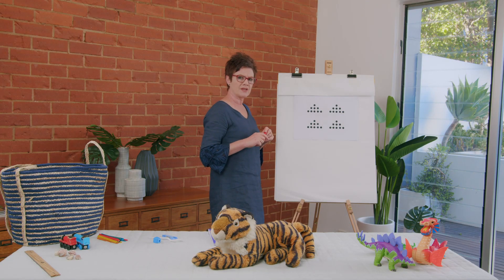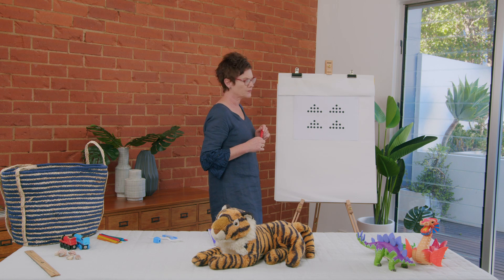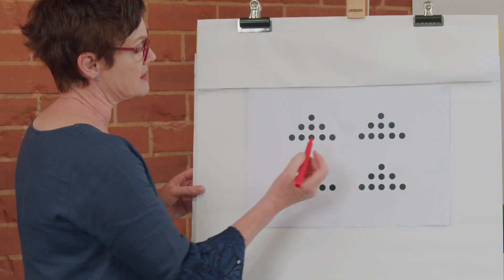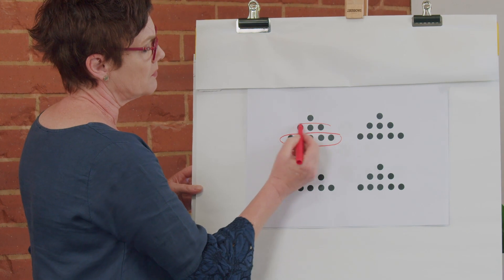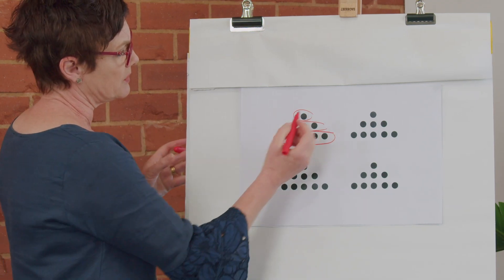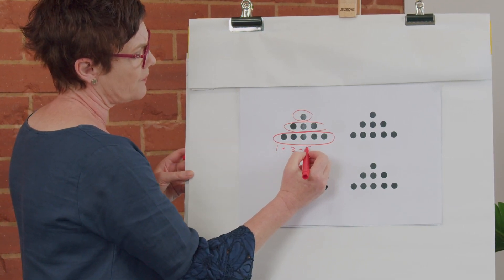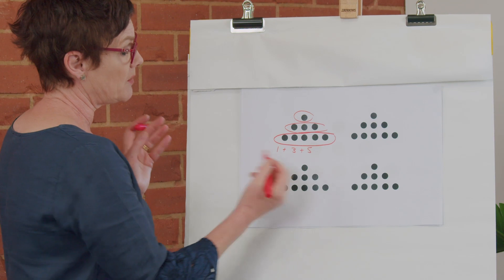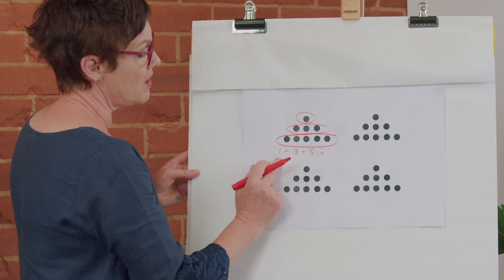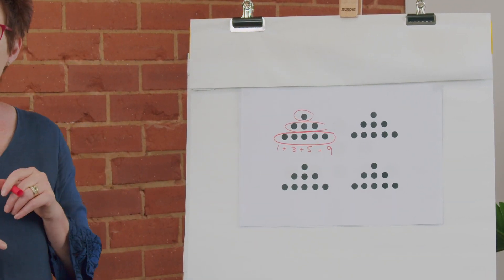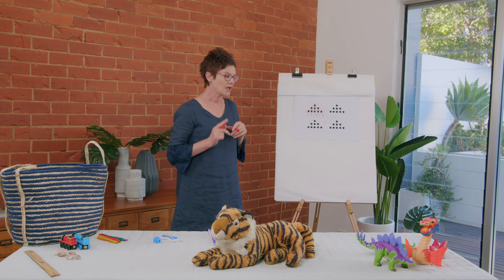I'm going to show you some of the ways of thinking and see if I match the way you thought about it. The first way we can look at this subitizing is to look at the bottom section, the middle section, and the top. I can see we've got one, three, and five. One and three make four, four and five make nine — so the total is nine.